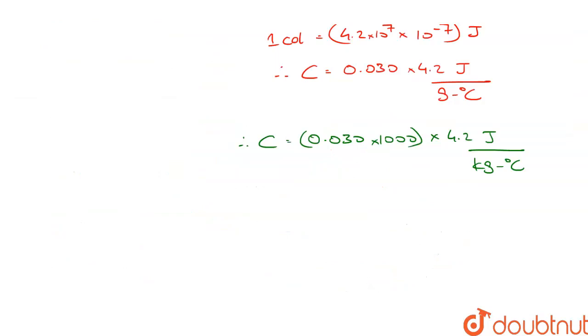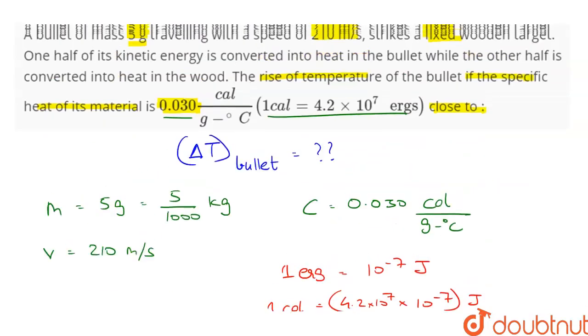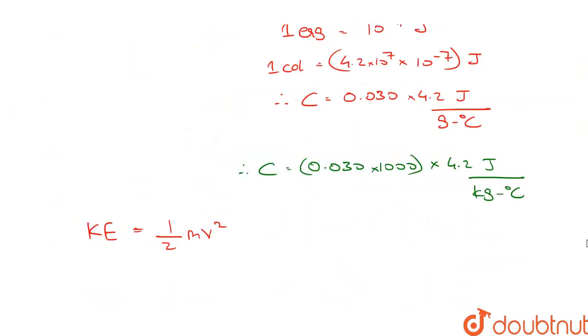Now we have all the given values in SI units. So the kinetic energy of the bullet KE before striking the target is half into mv square. And this kinetic energy after striking the target is entirely converted to heat energy. Therefore kinetic energy is also equal to Q.